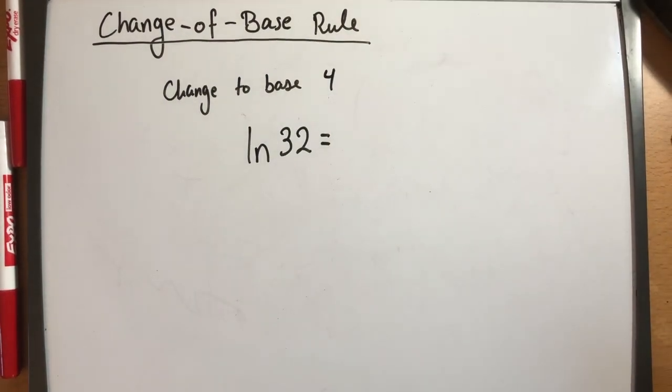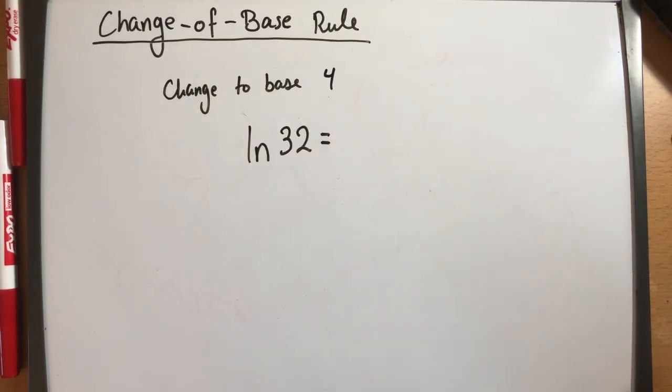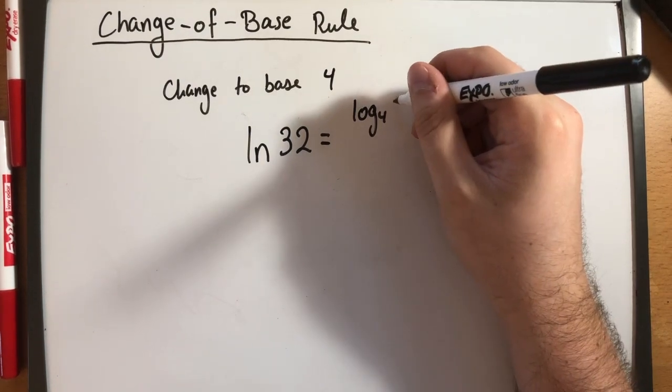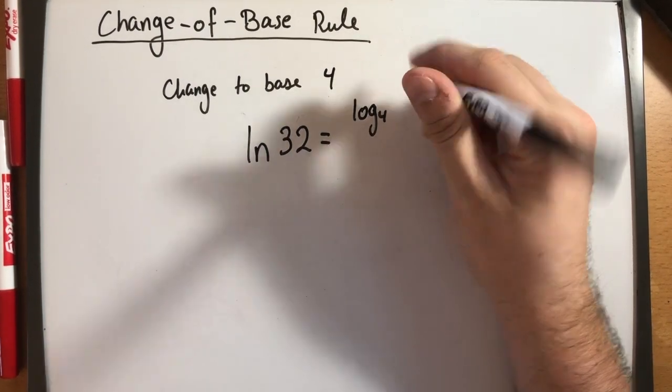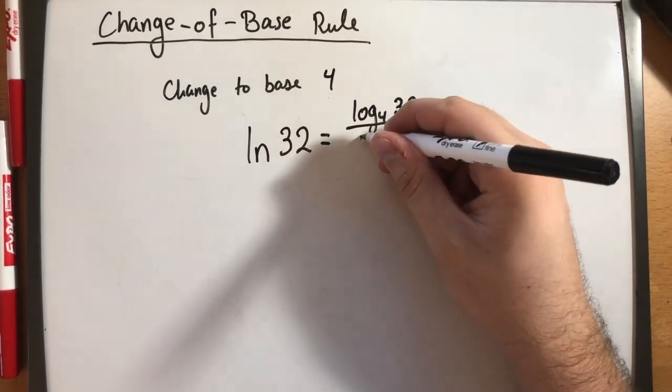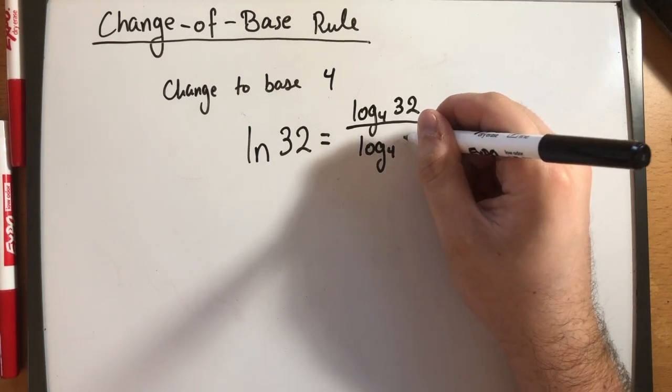Let's take, for example, this problem, the natural log of 32. I want to convert this so that I am only working with log base 4. So using the change of base rule I would do log base 4 of 32 divided by log base 4 of e.